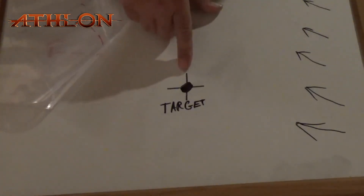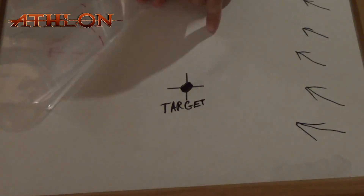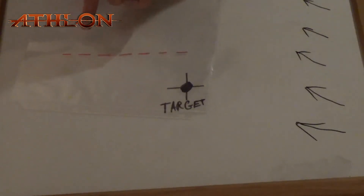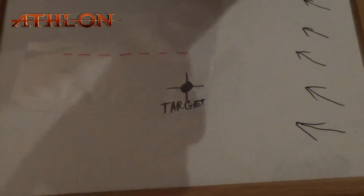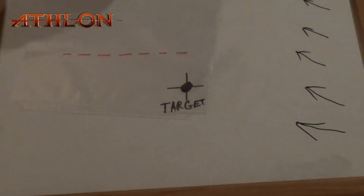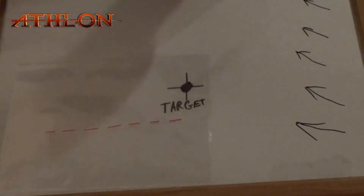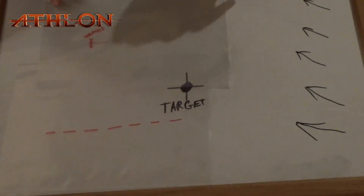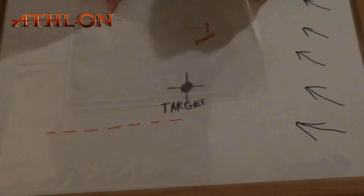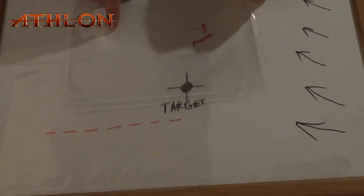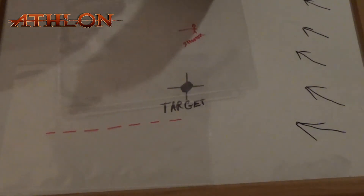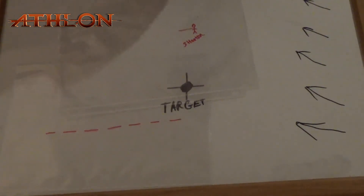Here we have our target with the direction of the Earth's rotation. Here we have the path line of the bullet — it's not a perfectly straight line, I realize that, I just drew it out real quick. But this is going to represent the actual line of the bullet as it's traveling. We've got the shooter. And we have the line that the bullet is coming out as it leaves the rifle barrel. This is very important to know, so that you understand.